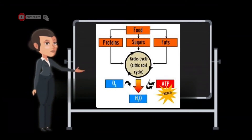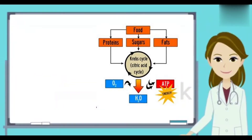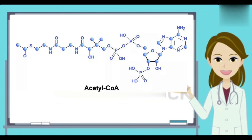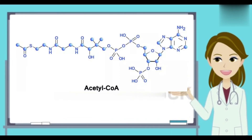Before all these larger molecules can enter the TCA cycle, they must be degraded into a two-carbon compound called acetyl coenzyme A. Glucose, sugars, and fatty acids are energy sources, but they cannot enter into the cycle in their original form. They must first be broken down into acetyl coenzyme A.